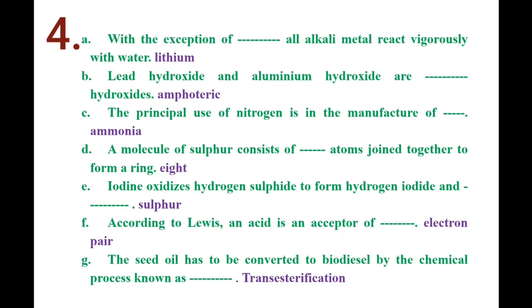Number C. The principal use of nitrogen is in the manufacture of ammonia.